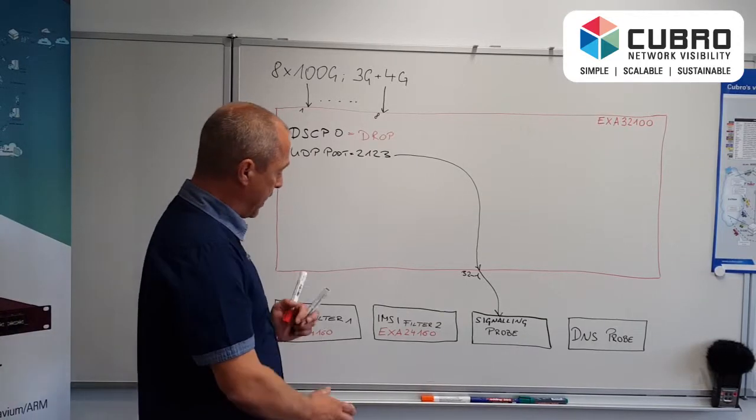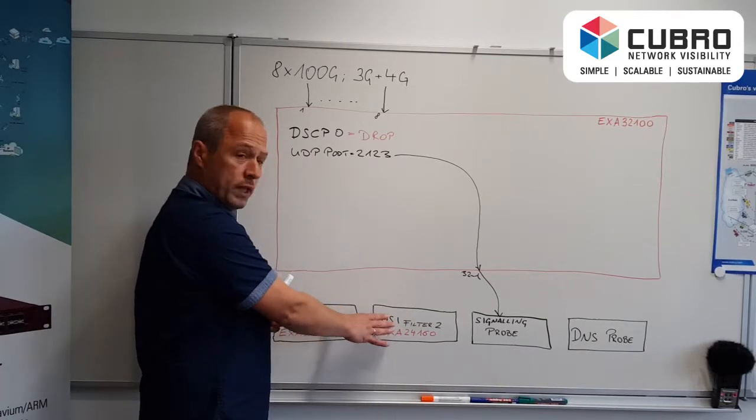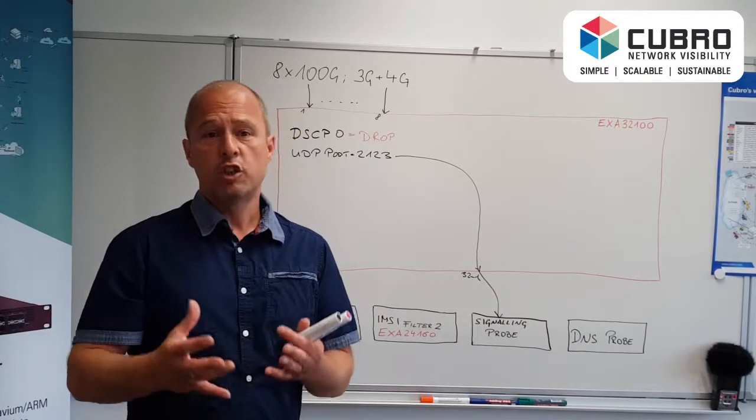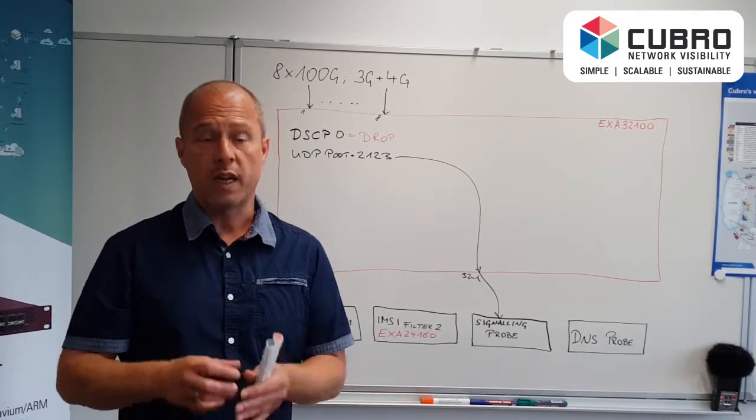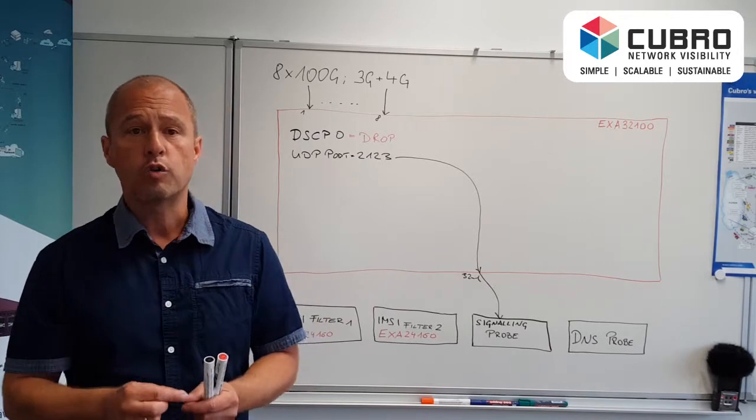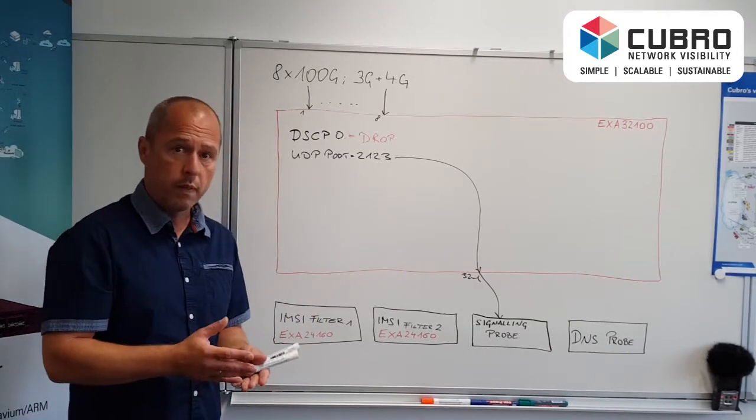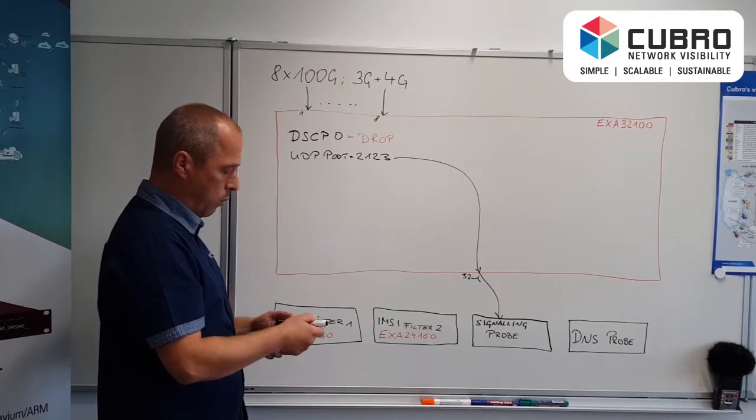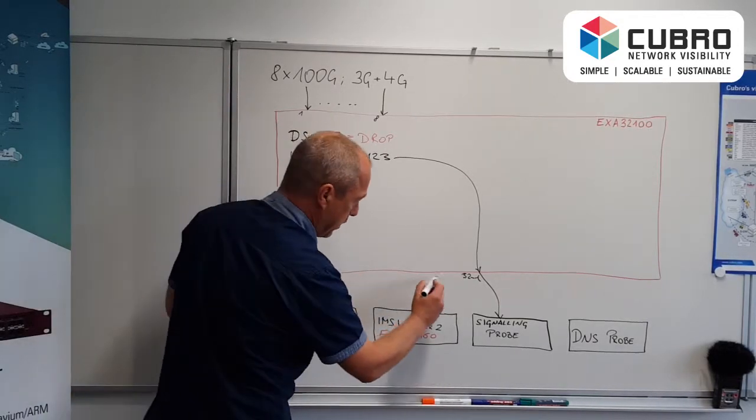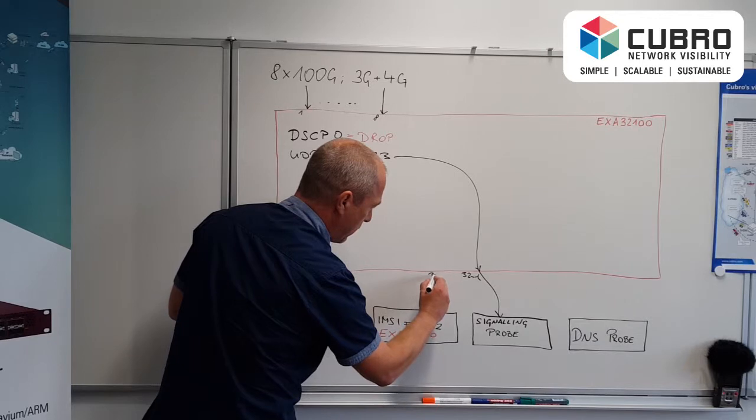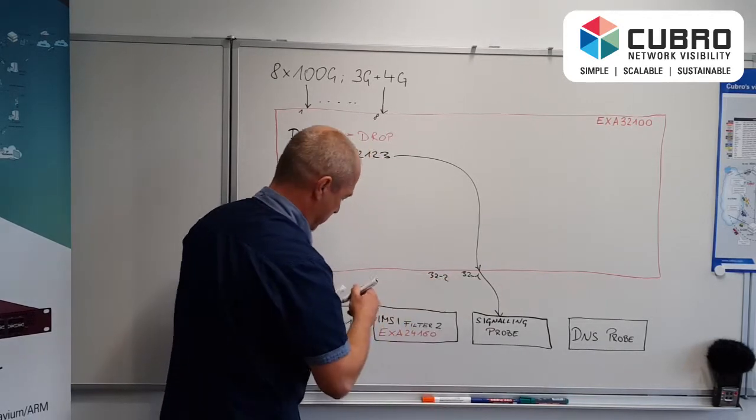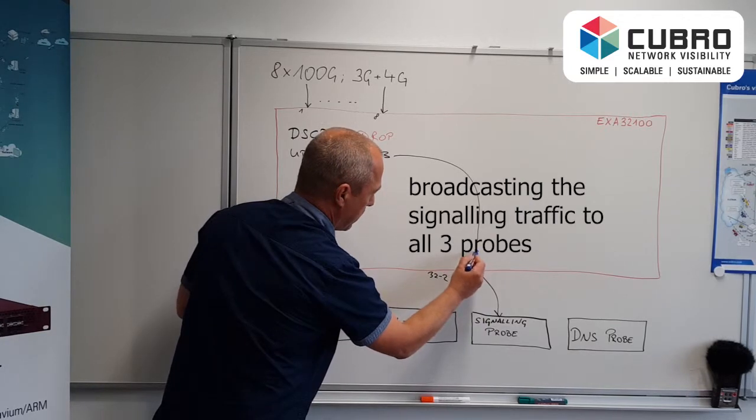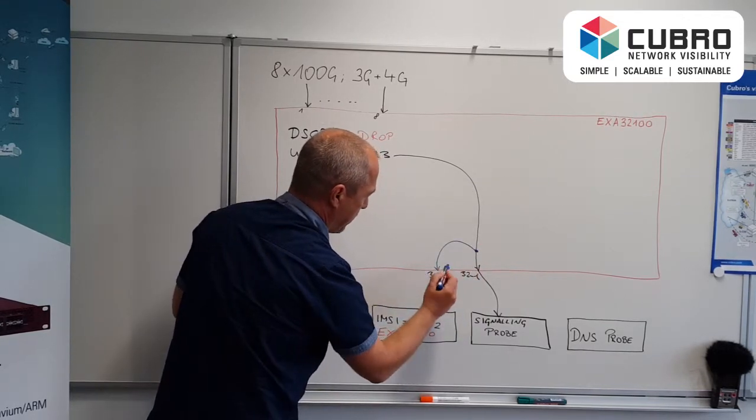But as a complication, the signaling also needs to go to our IMSI filtering probe. An IMSI filtering probe just will take all the user traffic and all the signaling that belongs to one specific call, the one IMSI. How we can do that? I do this just with mirror. That means we will just make a copy and say this is my interface number two.